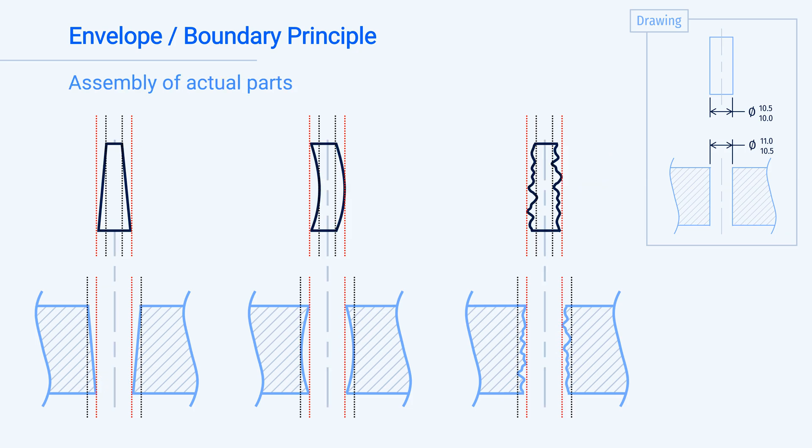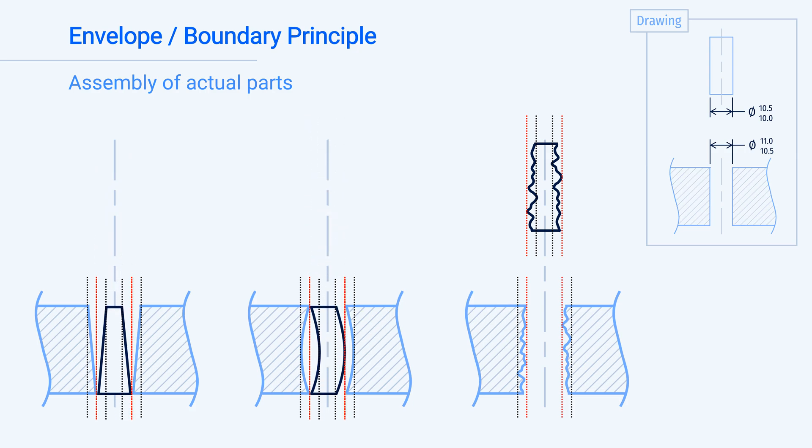When we assemble these parts together, we can see that it doesn't actually matter how the parts vary, but only what the size limits of the part are. Specifically, we can see that only the MMC limit or red dotted line controls the assembly of the two components.